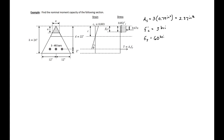In this example problem, we're going to find the nominal moment capacity of this triangular section shown here. We'll have three number eight bars as our tension reinforcement, which will give us a steel area of 2.37 square inches. We're given 3 KSI concrete and 60 KSI as our yield strength of our steel.